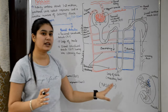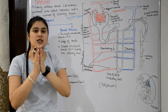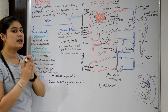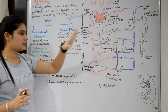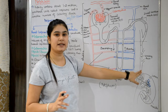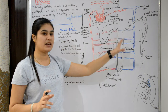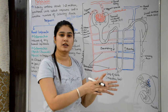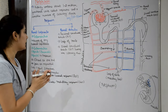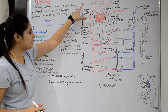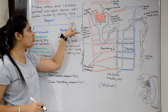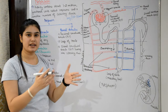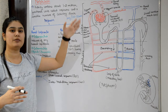We have two kidneys in our body, present as a pair. Each kidney contains 1 to 2 million nephrons and a small number of collecting ducts. Many nephrons drain into one collecting duct, so collecting ducts are fewer in number than nephrons. The length of a nephron varies between 35 to 55 mm.